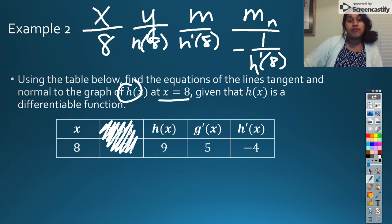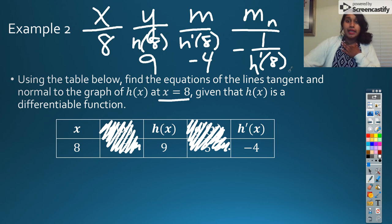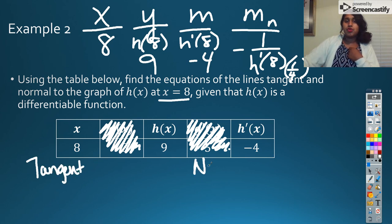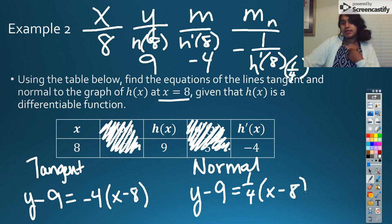And my negative reciprocal should be negative 1 over h prime of 8. So I can come down to my table. We've got some extra stuff here, a g and a g prime, which tells me that for this question I don't need that information yet. So h of 8 is 9, h prime of 8 is negative 4. So my normal line slope has to be positive 1 fourth. So this becomes y minus 9 is equal to negative 4 times x minus 8. My normal is y minus 9 equals positive 1 fourth x minus 8. And we're done with that example.